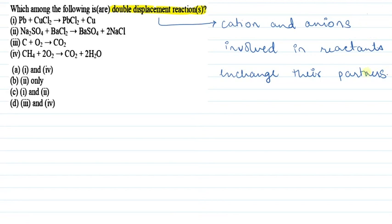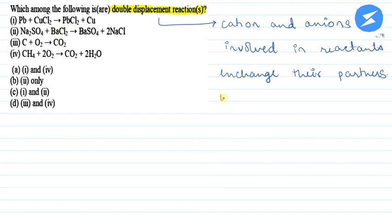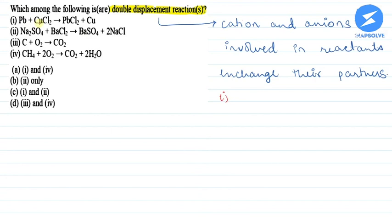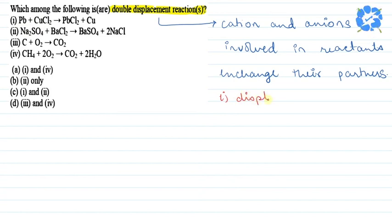If we talk about reaction number one, lead is a more reactive metal and it is displacing copper from its solution. But the thing is that there is no exchange of anion and cation. It is not a double displacement reaction — it is a simple displacement reaction.